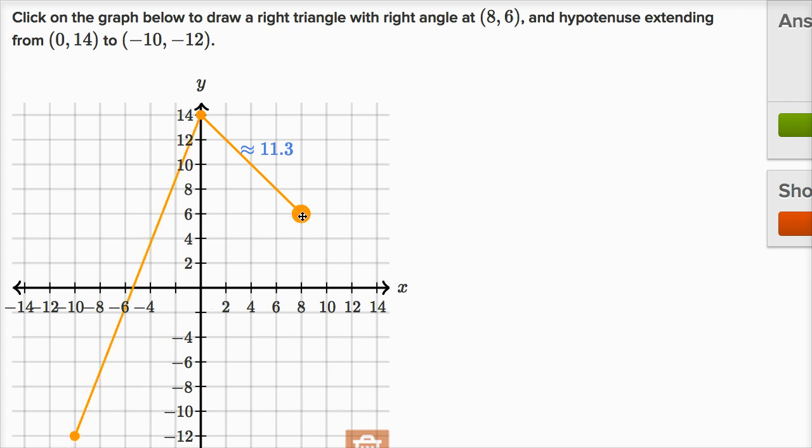So we go to that point right over there, and then we can just connect everything back by going to our original point, and there we have it. It even drew the nice right angle right over there. We have our right triangle.